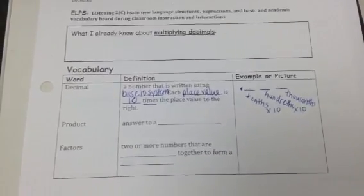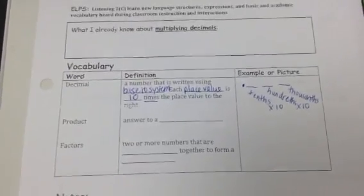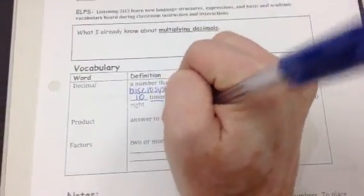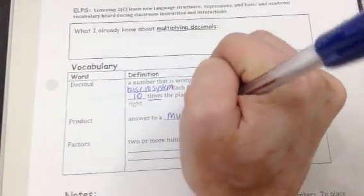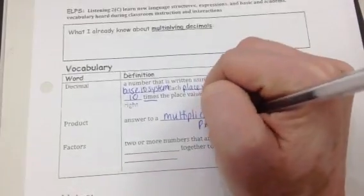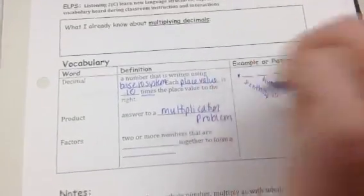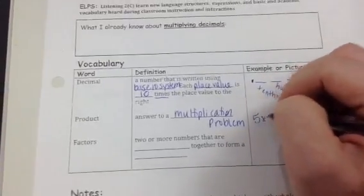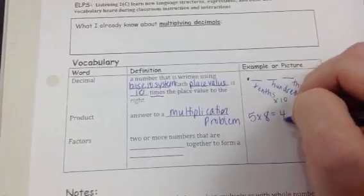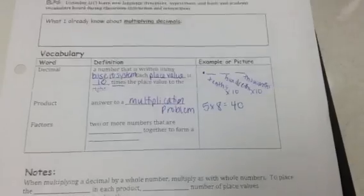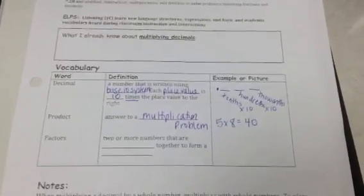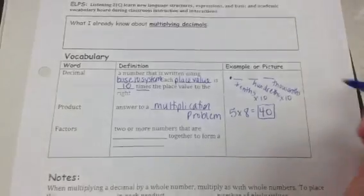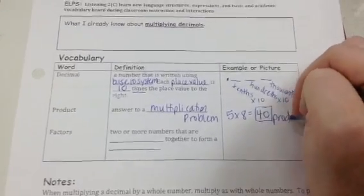Next vocabulary word is product. The product is the answer to a multiplication problem. So for example, that would be 5 times 8 equals 40. The 40 is what the product would be because it is the answer after you have multiplied. This is the product.